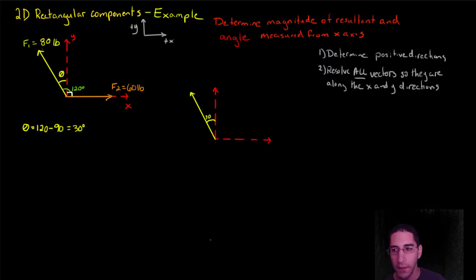That's good because when we resolve this, we need to get something along the y-axis. This will be my F1y, and I need to get something along the x-axis. This right here is my F1x. And I have a triangle. So with this triangle, I can use Sohcahtoa.